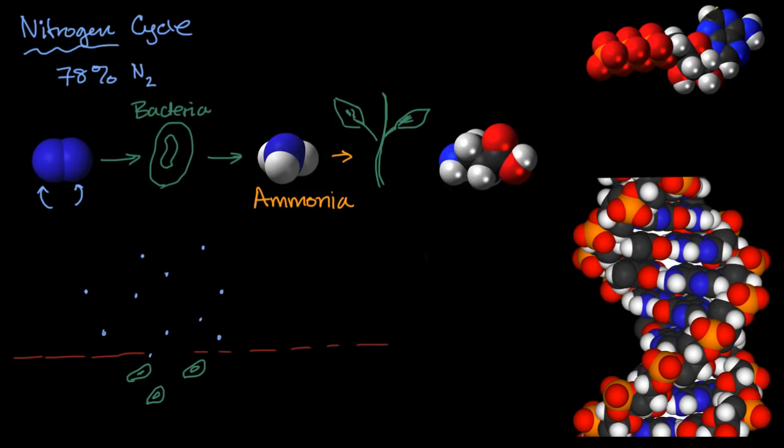So this right over here is an amino acid. You see the nitrogen right over there. This right over here is our good old friend ATP, adenosine triphosphate. The store, the quick store of energy in biological systems.